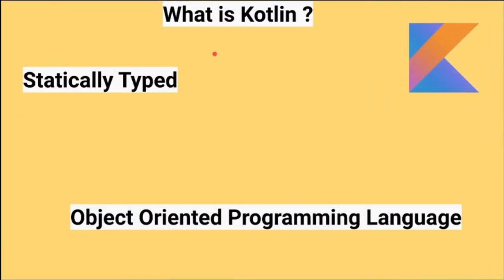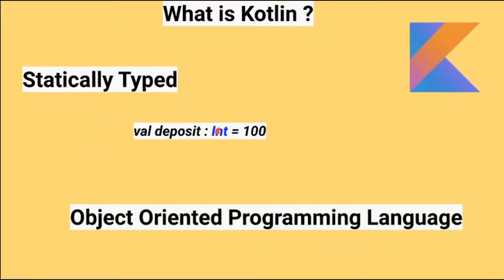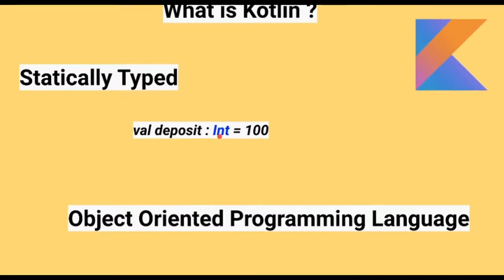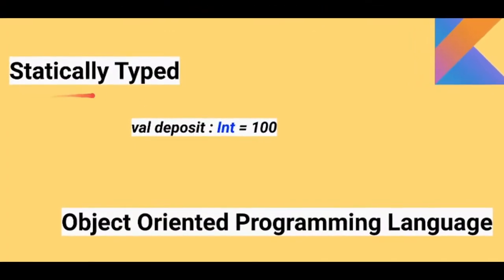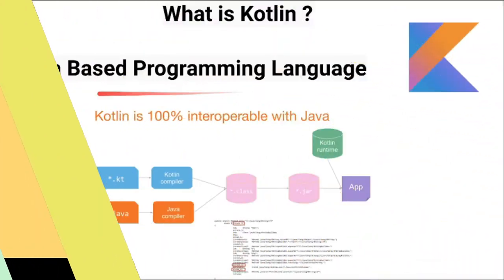So what is Kotlin? Kotlin is a statically typed, object-oriented programming language. What is the meaning of statically typed? The type of the variable is known at compile time — this is called statically typed.